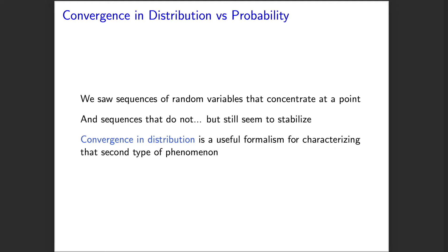Before, we looked at sequences of random variables that concentrate at a single point. For example, the sampling distribution of the sample mean of a sequence of independent observations concentrates at the population mean. There, we use the notion of convergence in probability.